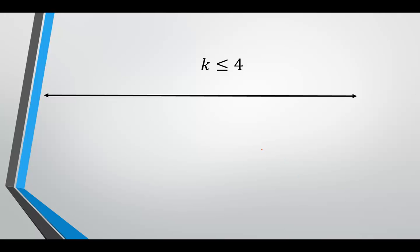If we solved an equation and came up with k less than or equal to 4, let's do this example first. My lab will have you enter your interval notation first, but I suggest you draw the solution on the number line on a sheet of paper and then figure out your interval. So if we want k less than or equal to 4, let's locate 0, 1, 2, 3, 4. That is the number 4, k equals 4.